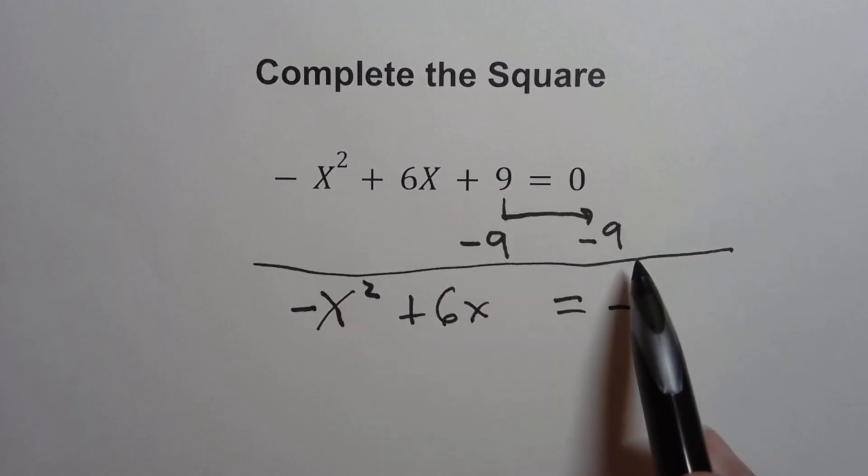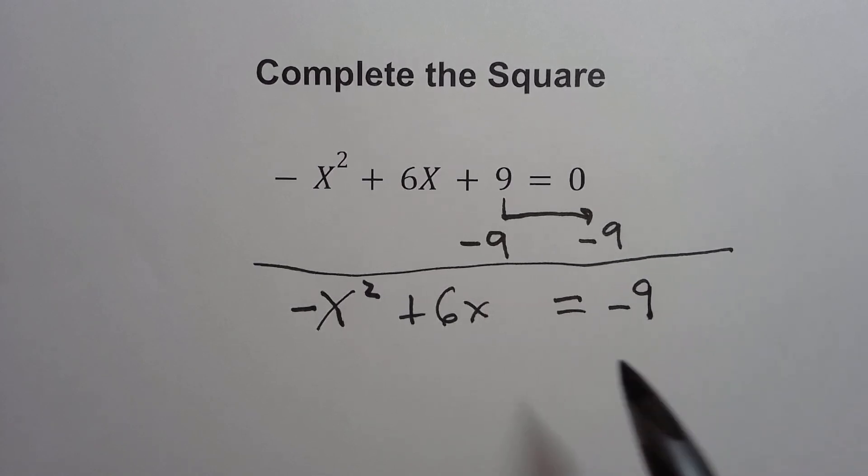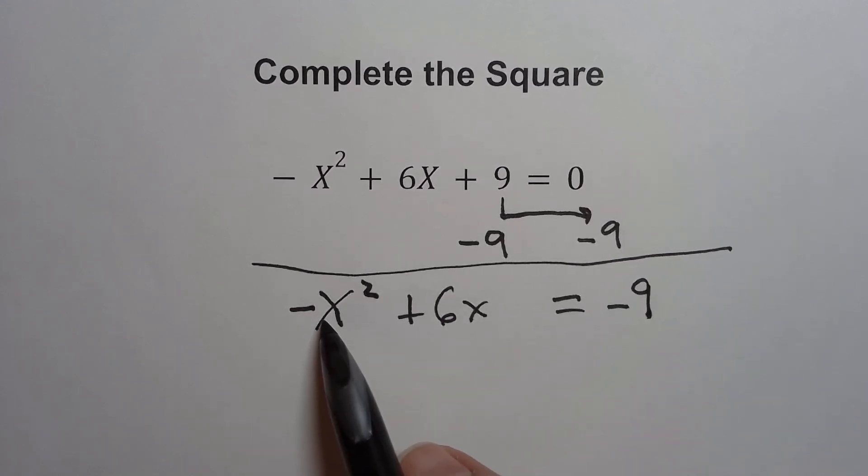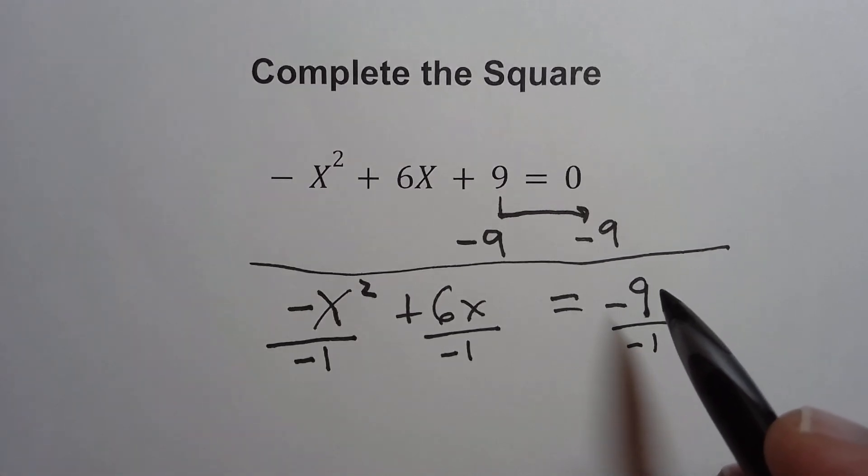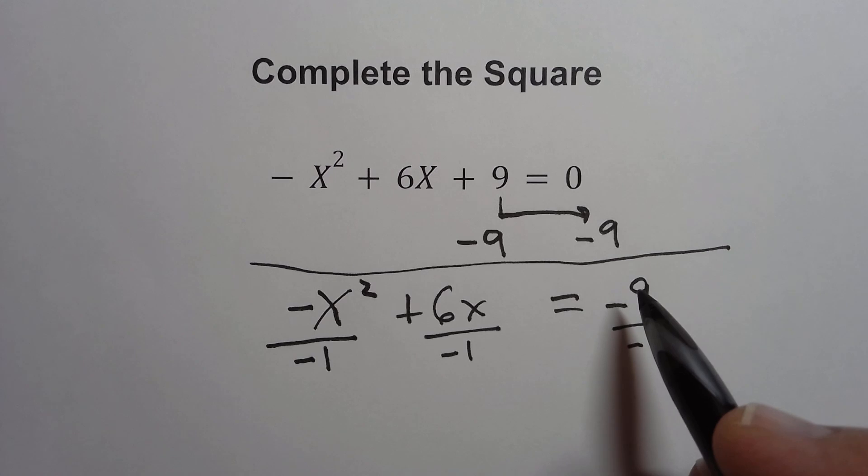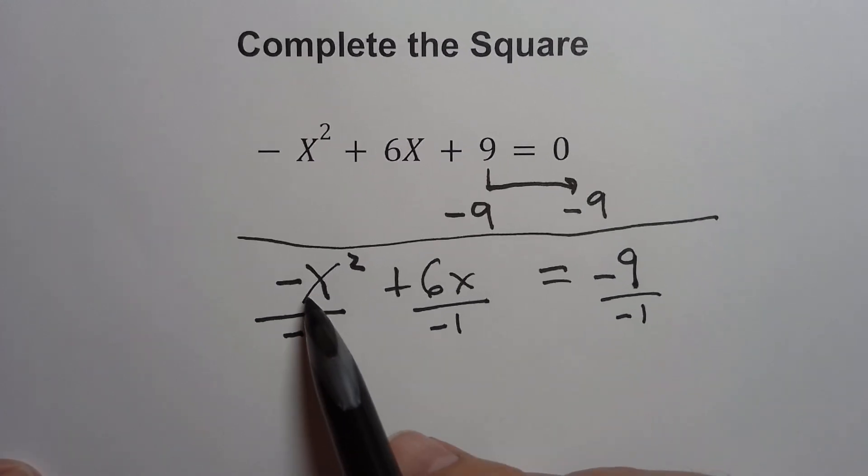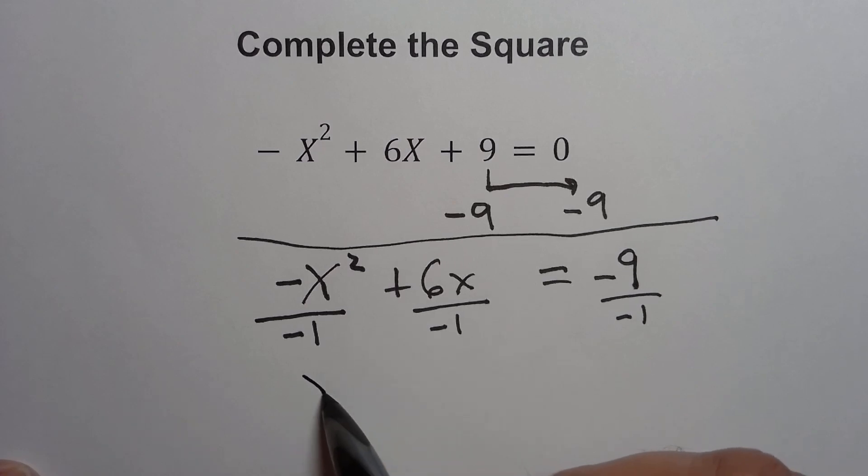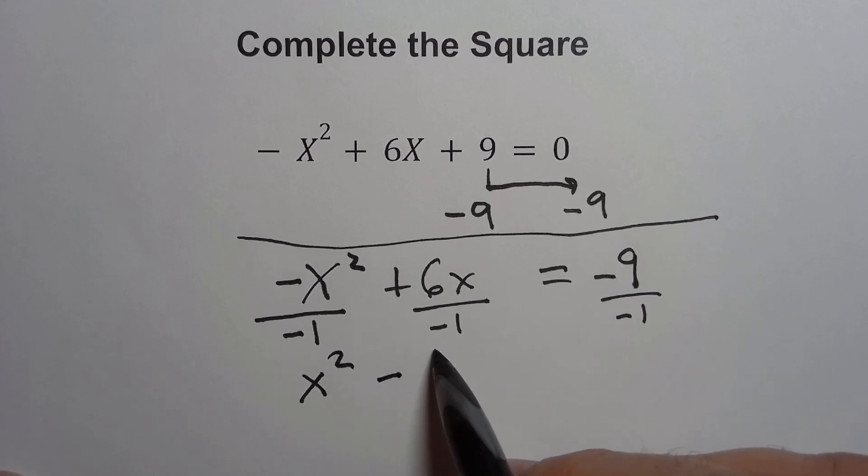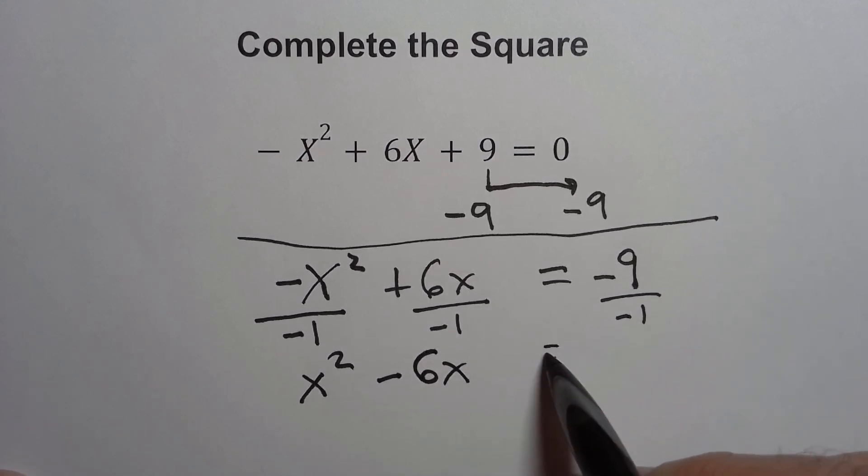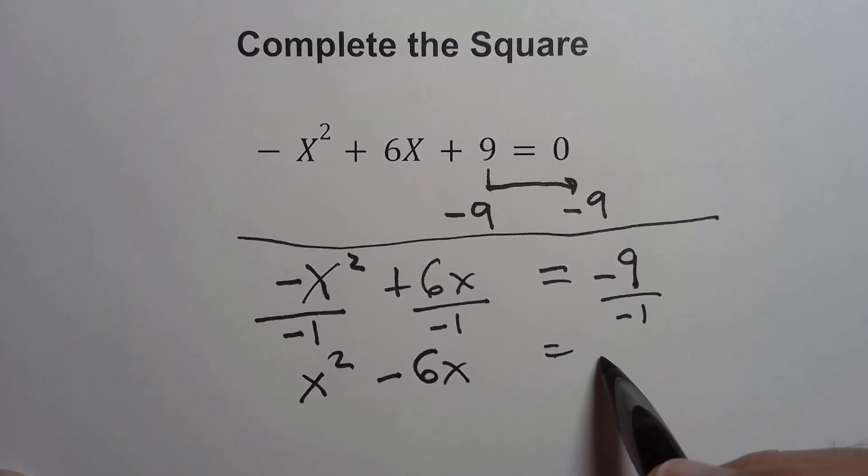All I've done was move the positive 9 to the other side, and it flips the sign. The next thing we want to do is we want to deal with this negative here in front of the x squared. We're going to do that by dividing each of the terms by negative 1. So I'm going to divide this term by negative 1, and this term by negative 1, and this term by negative 1. It's not going to change the terms, it's just going to flip the signs. So we've got a negative here and a negative on the bottom. This becomes a positive x squared. We've got a positive 6, we're going to change that over to a negative 6x, and the negative 9 is going to change into a positive 9.